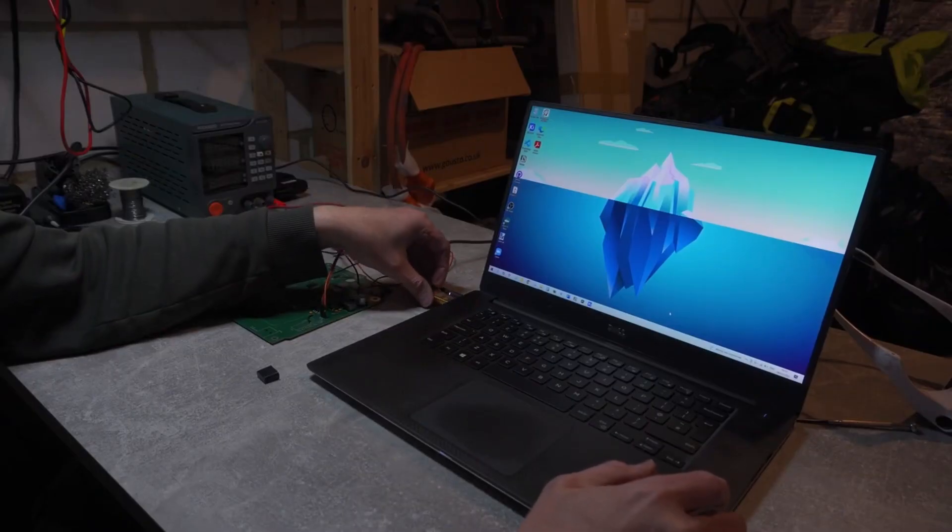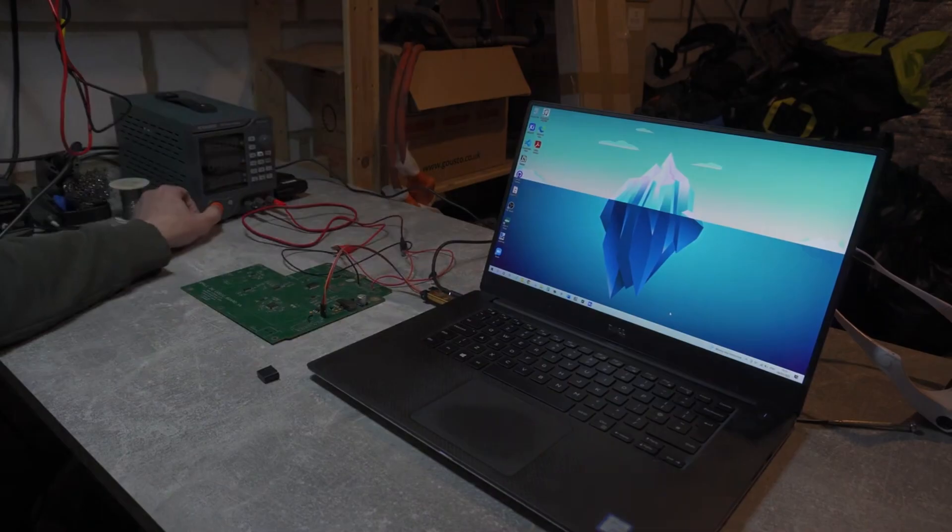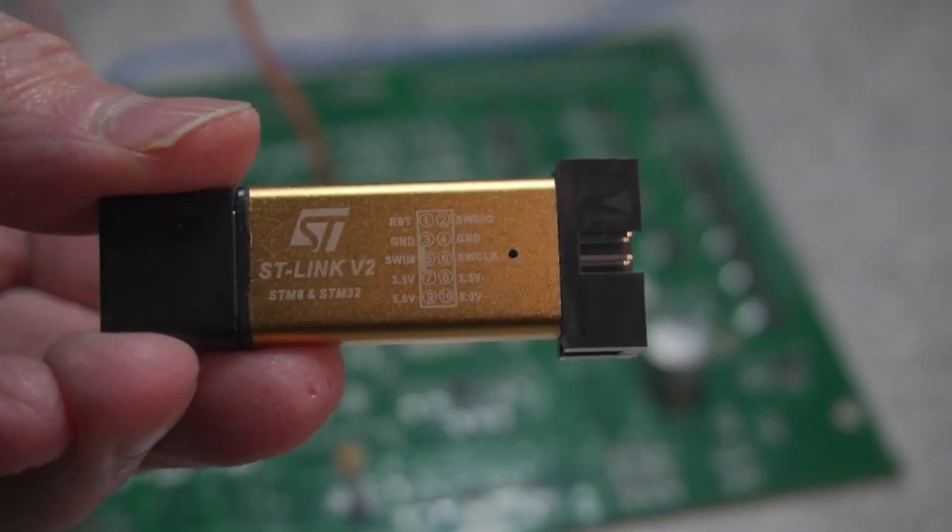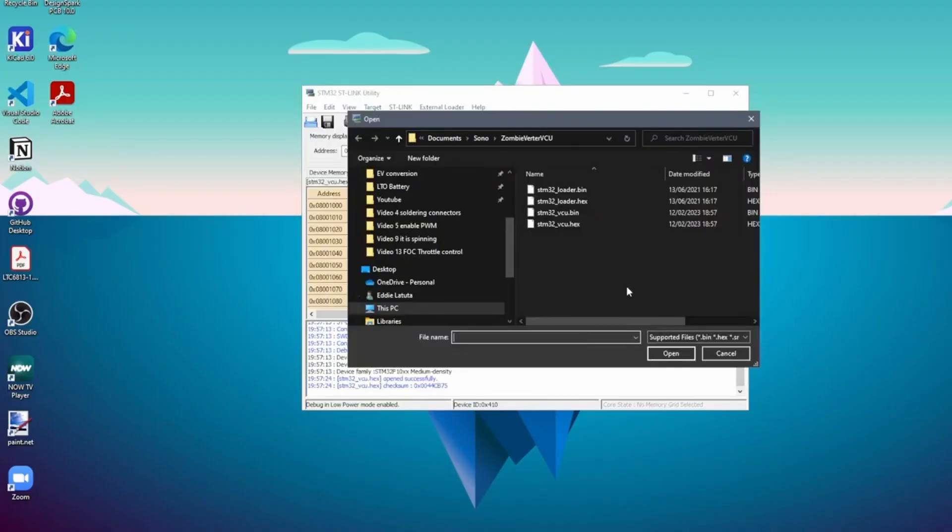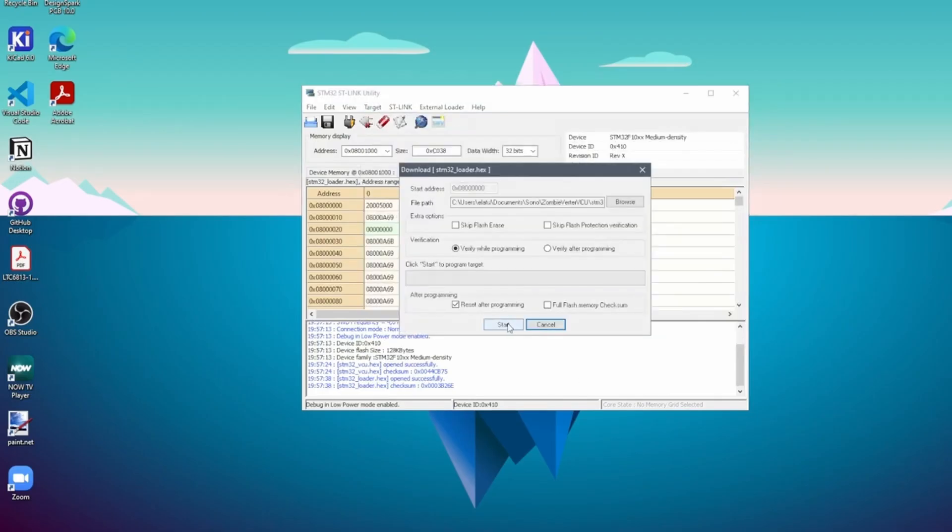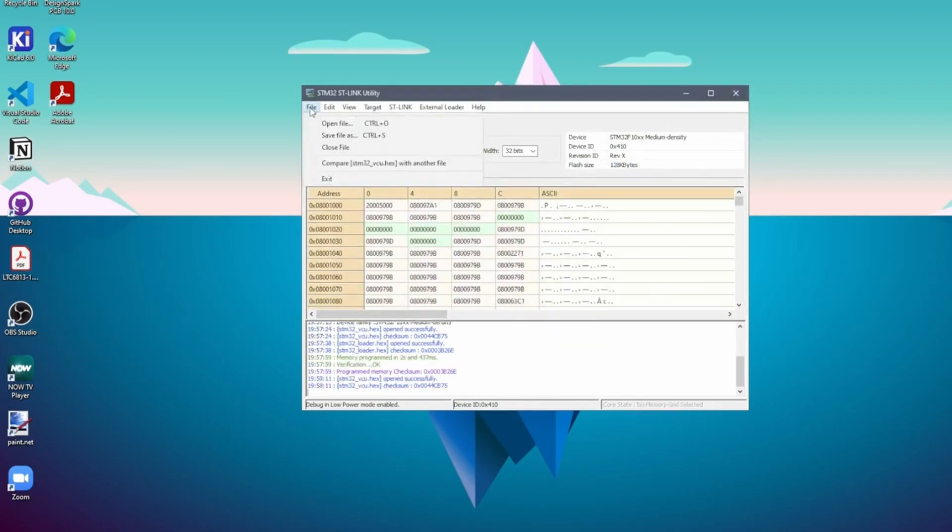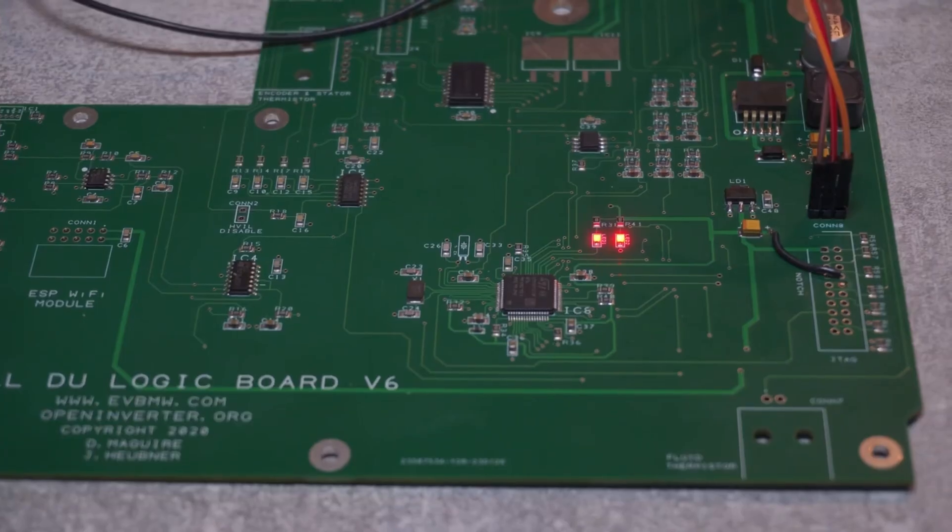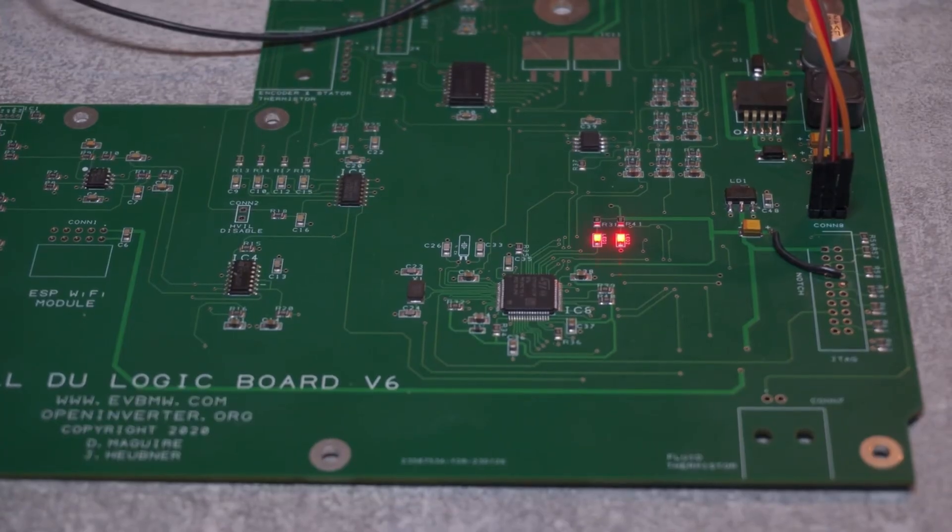I decided to program the Open Tesla Inverter board before I start soldering any more components. As usual I use ST-Link programmer to do the programming bit. First I need to connect ST-Link programmer and load the bootloader. Program and verify. After this I could program the signed firmware and program and verify again. Yes, this looks good, no surprises this time for me.